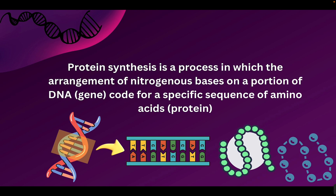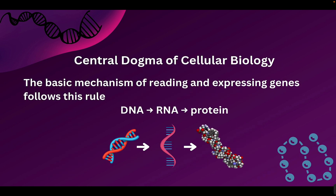We're basically asking how do we get from this information, this blueprint, to an actual final product. This happens through what's called the central dogma of cellular biology. Dogma means principle or main idea, so this is sort of the theme of all of what happens in cells — how we take genes from our DNA, read and express them. The central dogma is that we always go from DNA to RNA to protein.